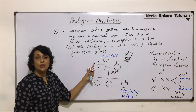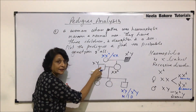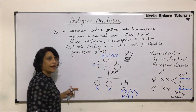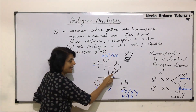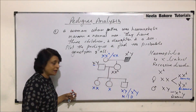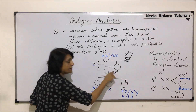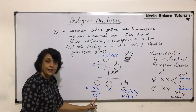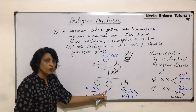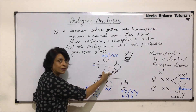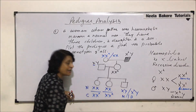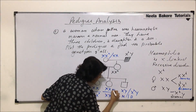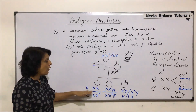For the daughters: they receive X^h from their father. They can then get either a normal dominant X or the recessive X^h from the mother. If they get the normal X from the mother, the daughter is normal. If they get the recessive X^h from the mother, the daughter is a carrier. So there is a 50% chance of being normal and 50% chance of being a carrier.